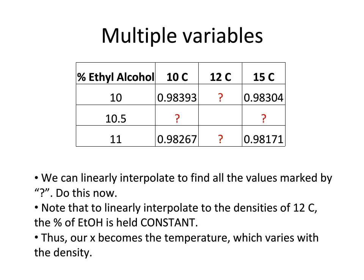You can also do it the other way where you hold the percent ethyl alcohol constant. And then you're going to use the different temperatures as your x values. So keep in mind, we always want density to be our y value here because that's the values we're working with. So I'm going to do it both ways to show that you do indeed get the same value either way. You should be getting the same value. So let's take a look.